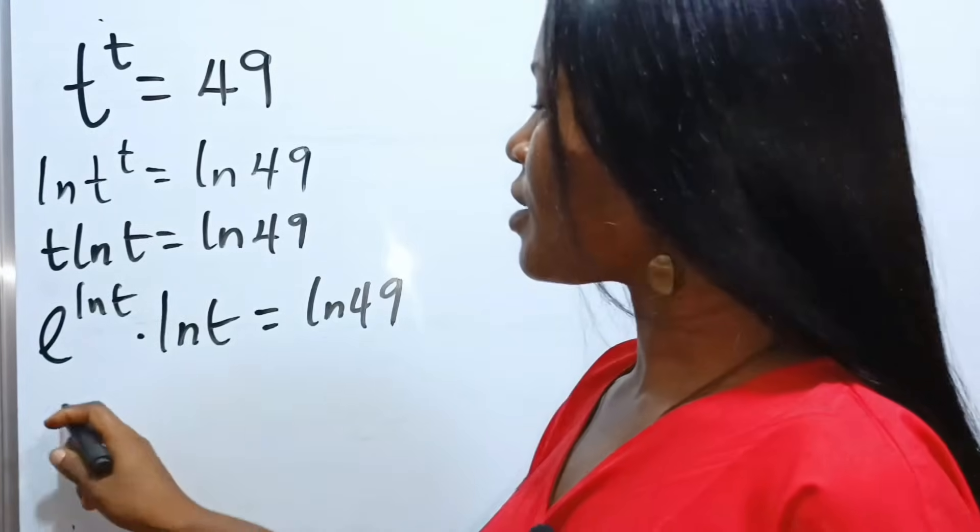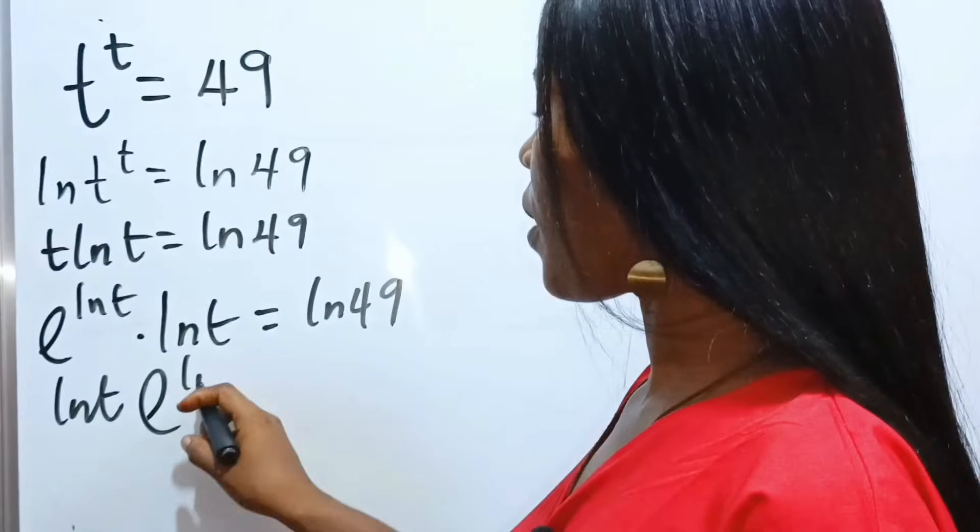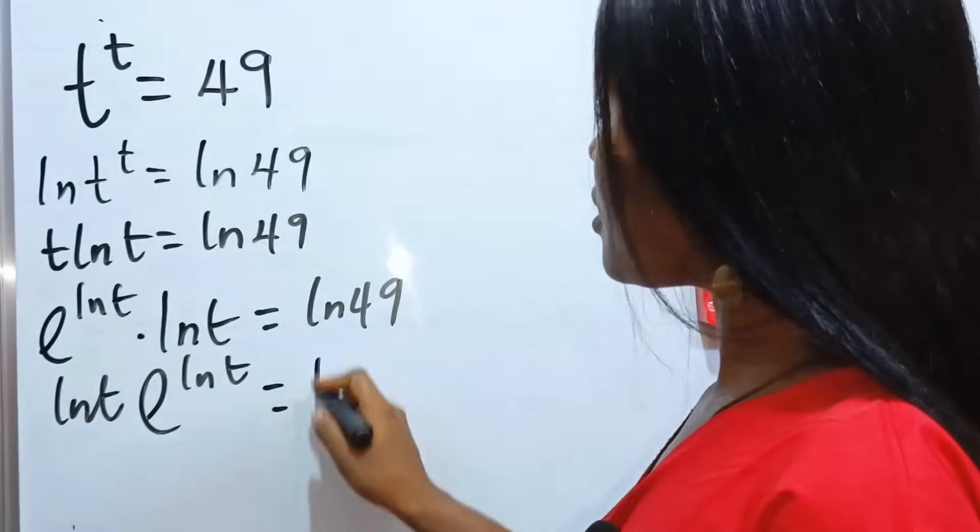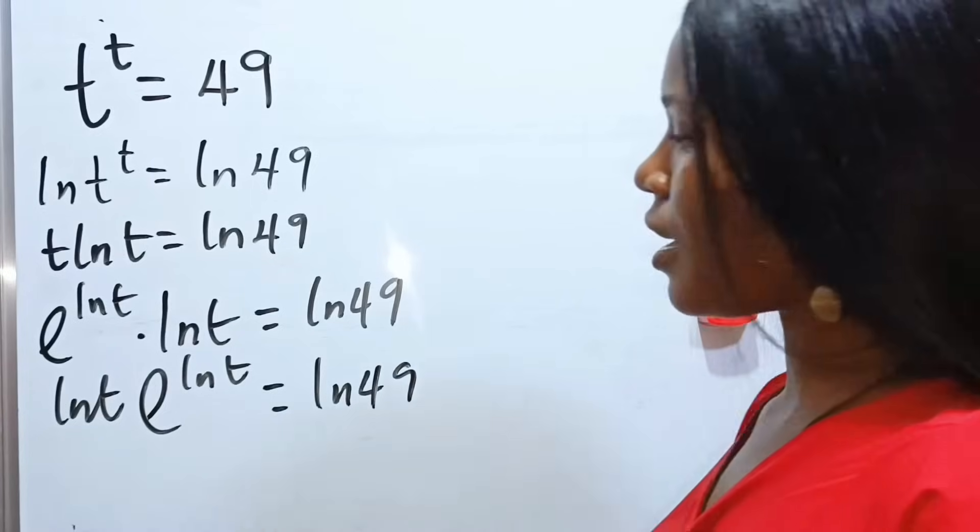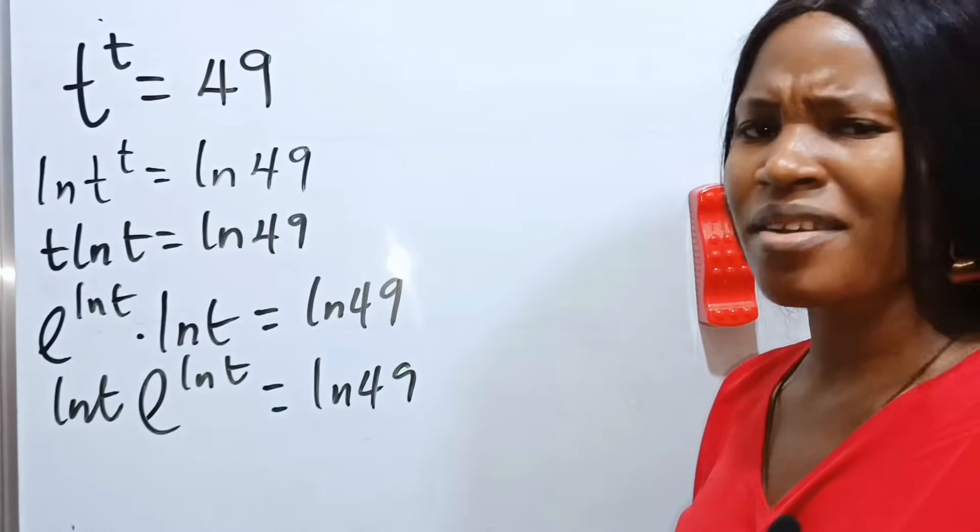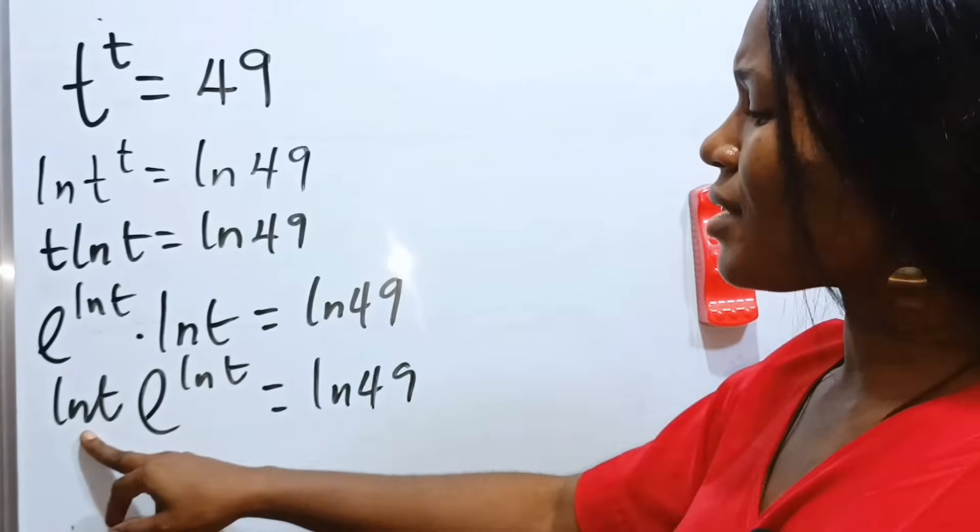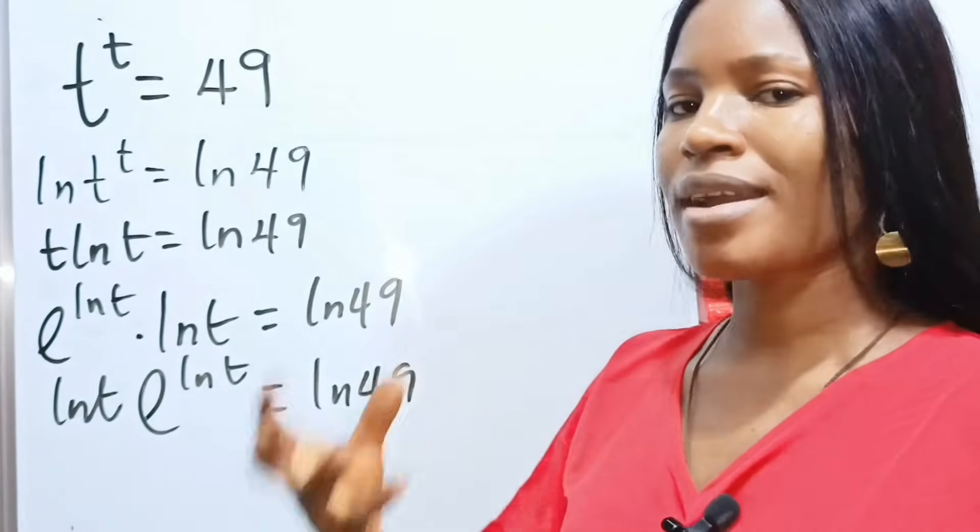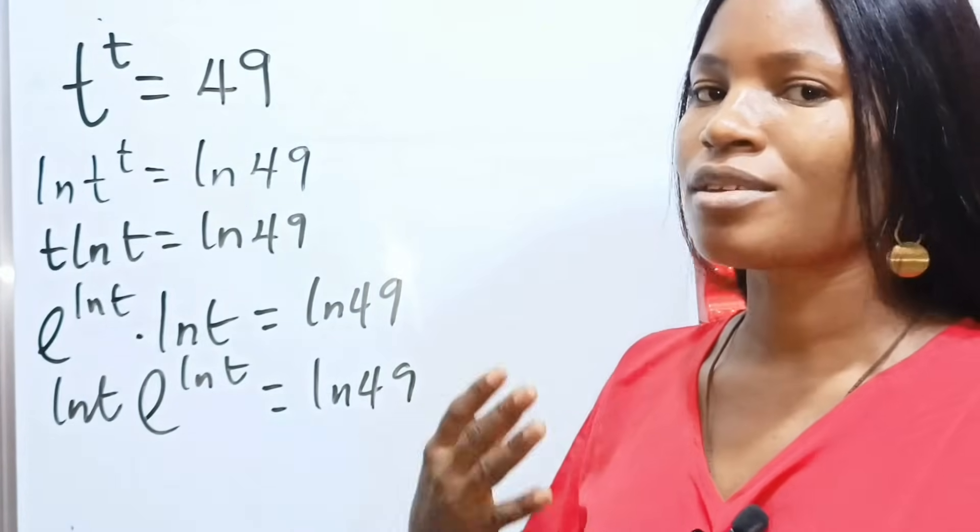So, we can now write this as ln t, e to the power of ln t. That is, I wrote this first, then brought this in, is equal to ln 49. Are you seeing anything? Very easy. You can see that what we now have as our coefficient of e is now the power of e. So, this is the right time to introduce the Lambert W function.